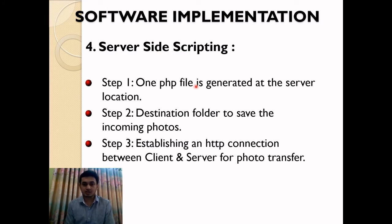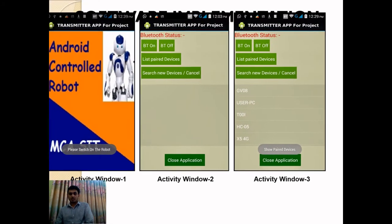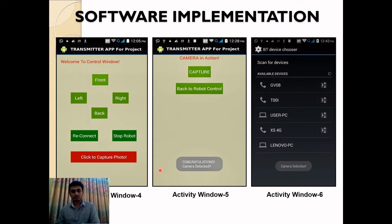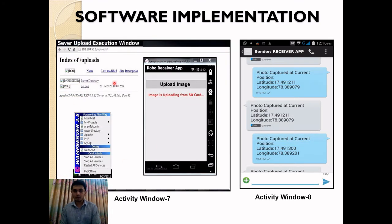For server-side scripting, one PHP file is generated at the server location. An HTTP connection between client and server is established for photo transfer. Some screenshots of the transmitter Android app are shown: the Bluetooth control window, robot control window, and camera control window. A demo for server upload and SMS from the receiving Android app is shown here.